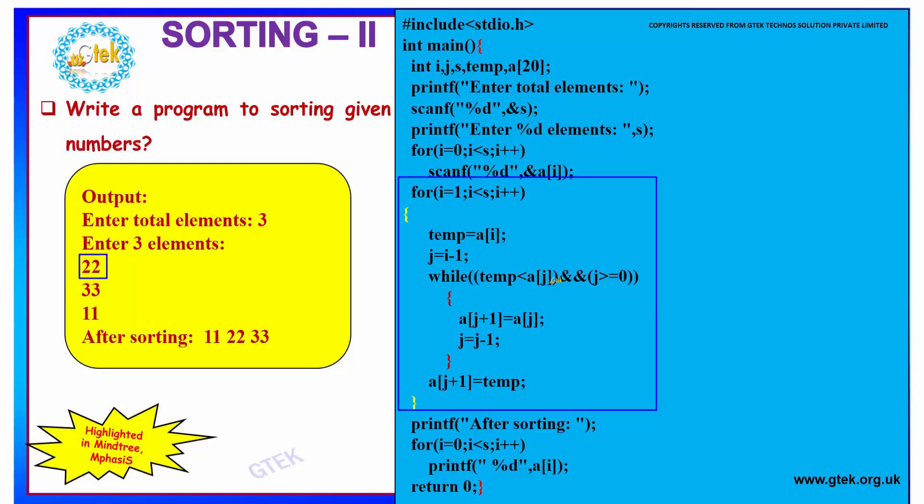We are checking whether it is less than a of j, that is a of 0. It is not less than, since it is equal. Hence this while loop exits. And the value of your array at j plus 1, that is a of 1, it is stored as your temp. That is your 22 comes over here.